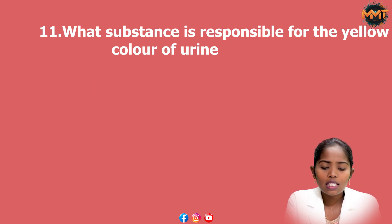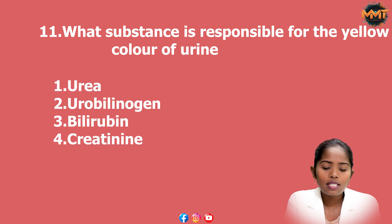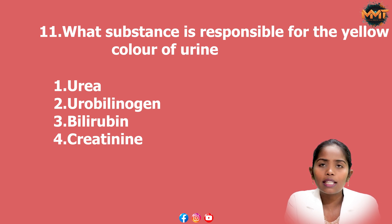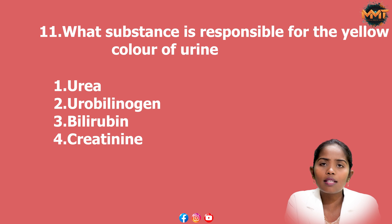Question 10: What substance is responsible for the yellow color of urine? Options: 1. Urobilin, 2. Urobilinogen, 3. Bilirubin, 4. Creatinine. The answer is Urobilinogen.